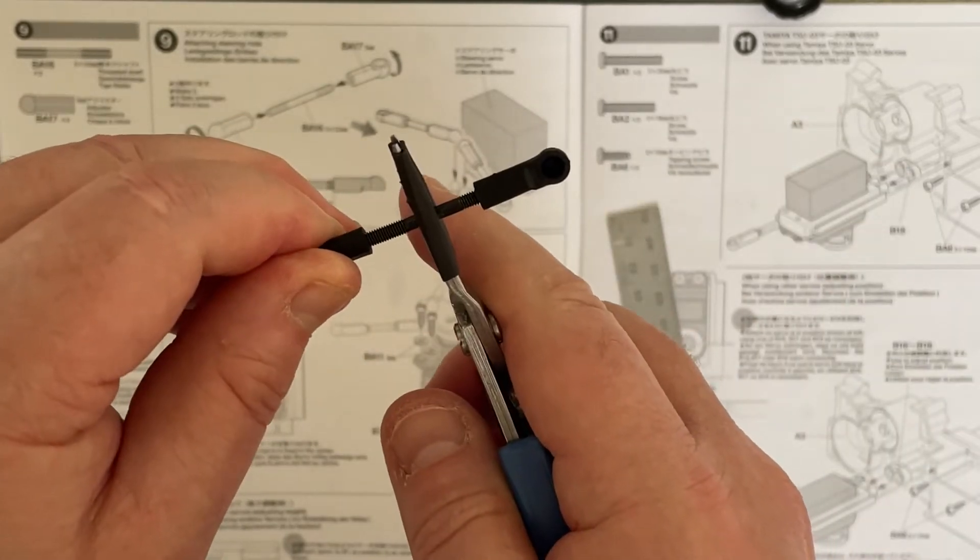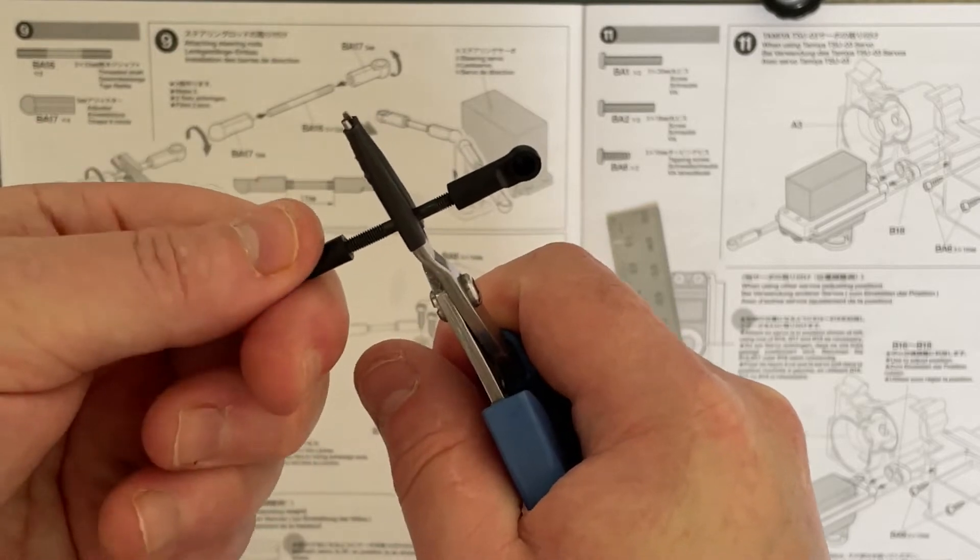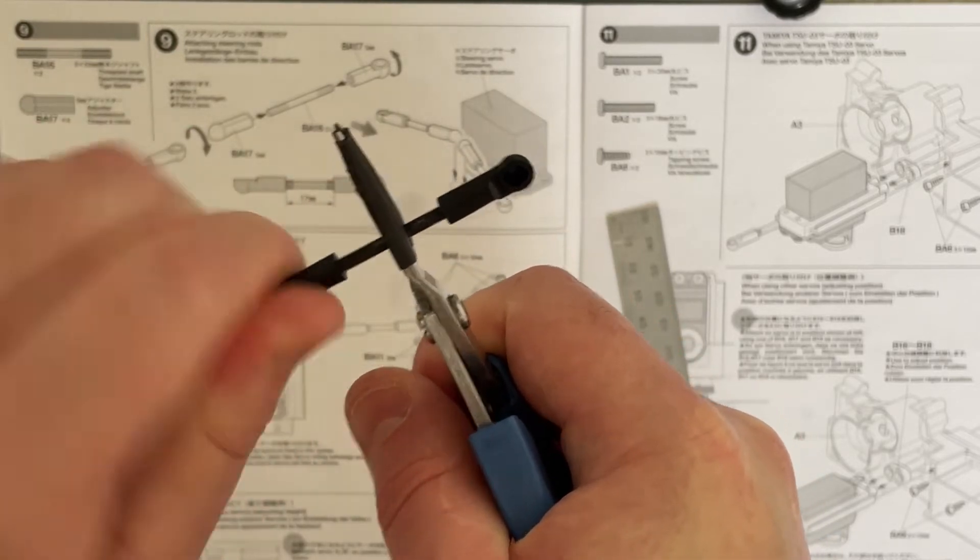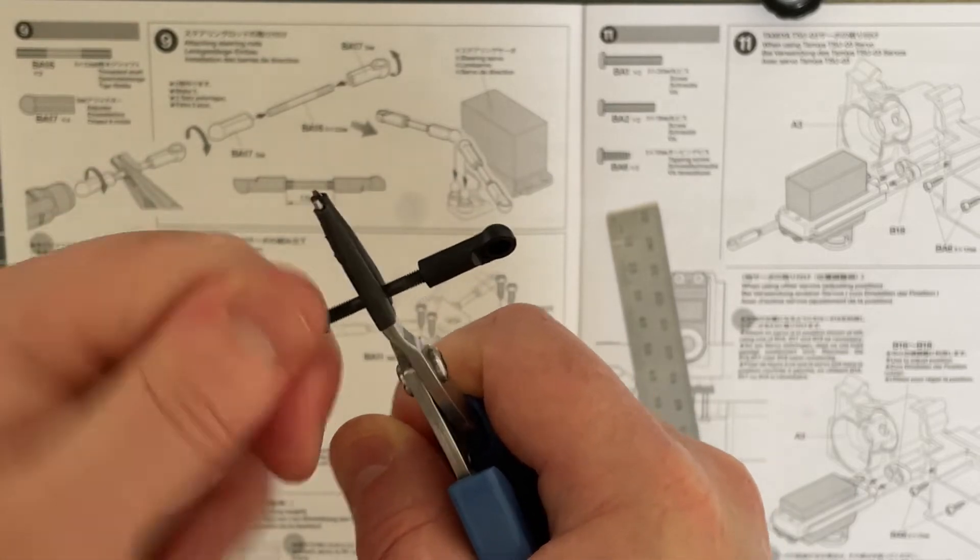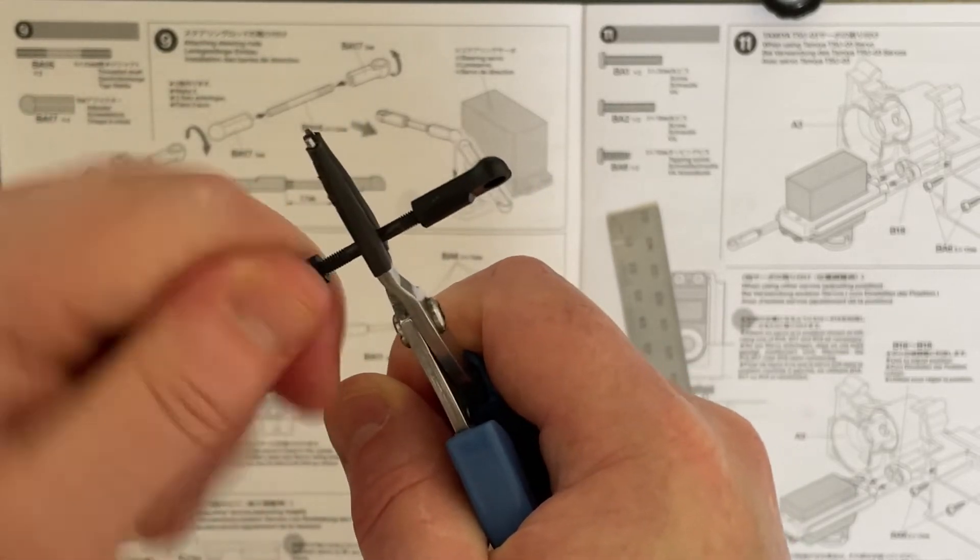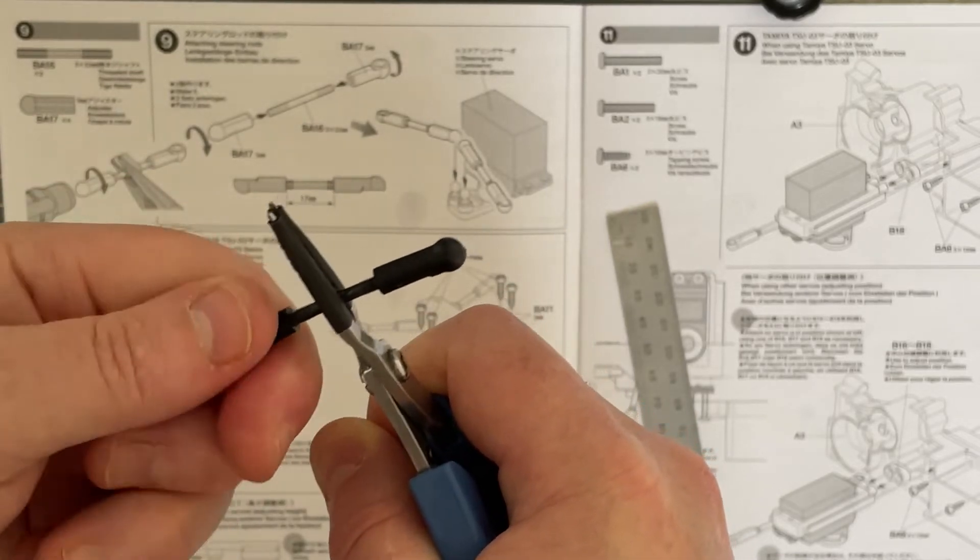Again, grip in the center there, nice and tight so it doesn't slip, and wind that on too. We need to wind these on so that you get a 17-millimeter gap between the cups. I'm going to guesstimate.